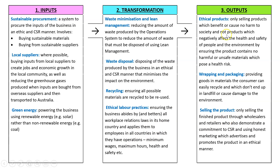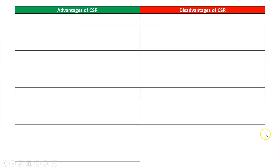For outputs, first of all, we want to sell a product that's ethical — the most obvious one being that we don't want a product that damages the world or the environment. We want to make sure our wrapping and packaging is recyclable and easy for customers to dispose of, so it's not just plastic that ends up in landfill. And lastly, we want to sell the product ethically, including through responsible marketing.